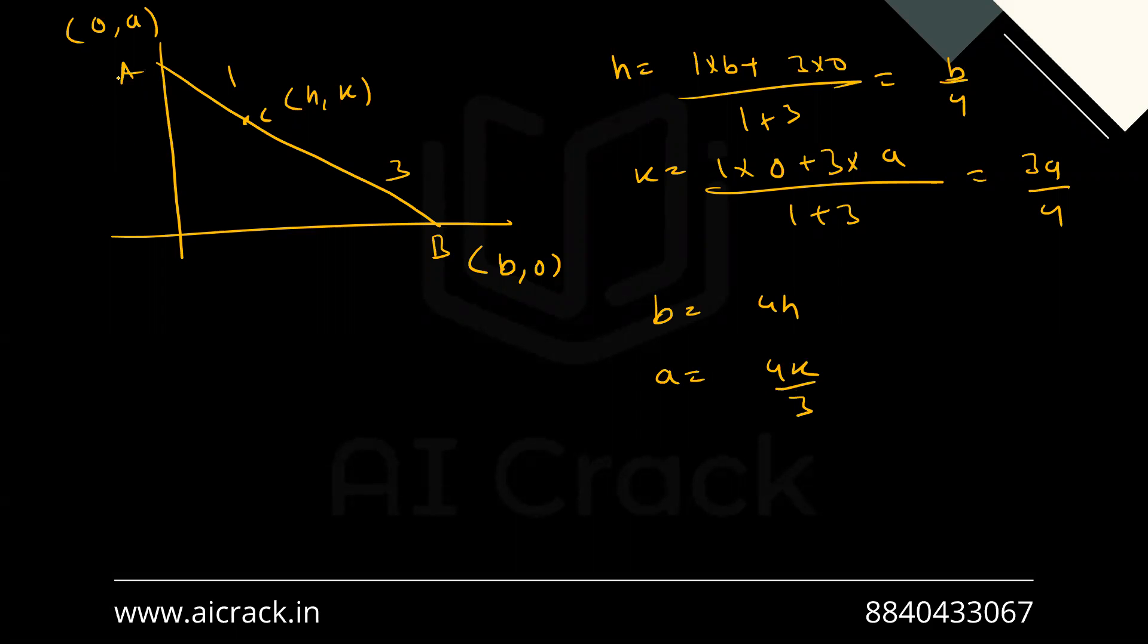Now we know that this is a right angle triangle, so AO square plus OB square equals to this length, that is p, which is given in the question. So AO square plus OB square equals to p square.